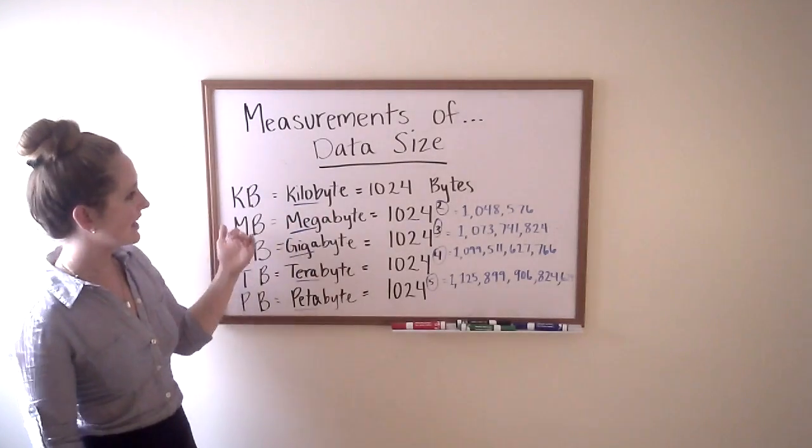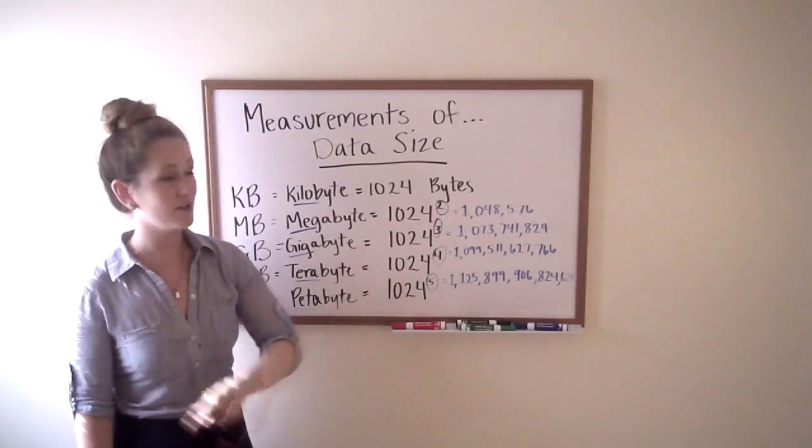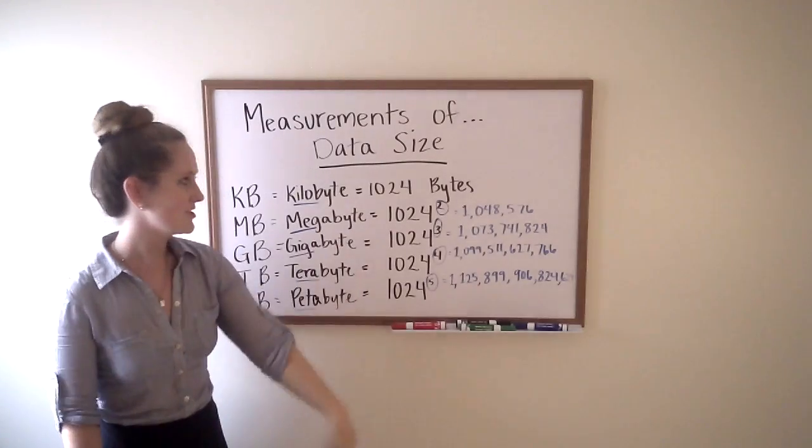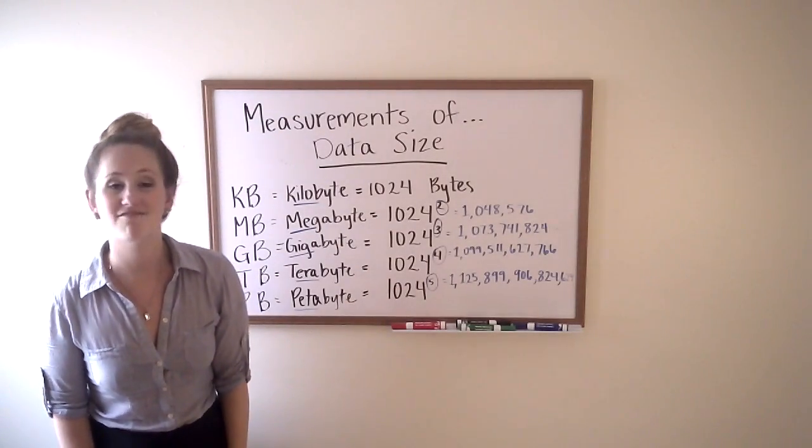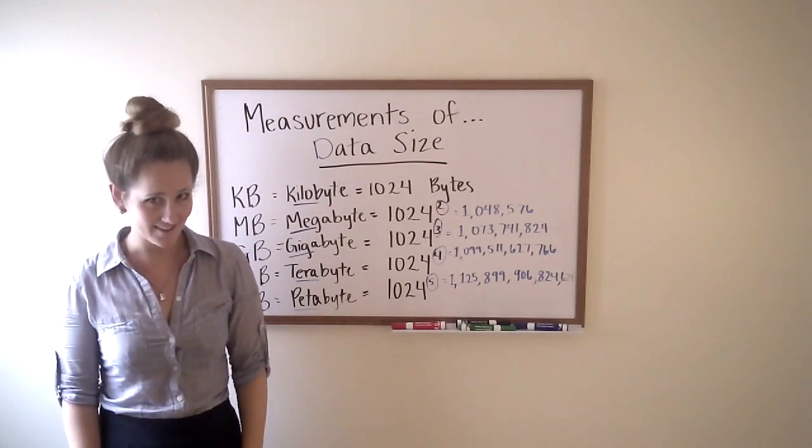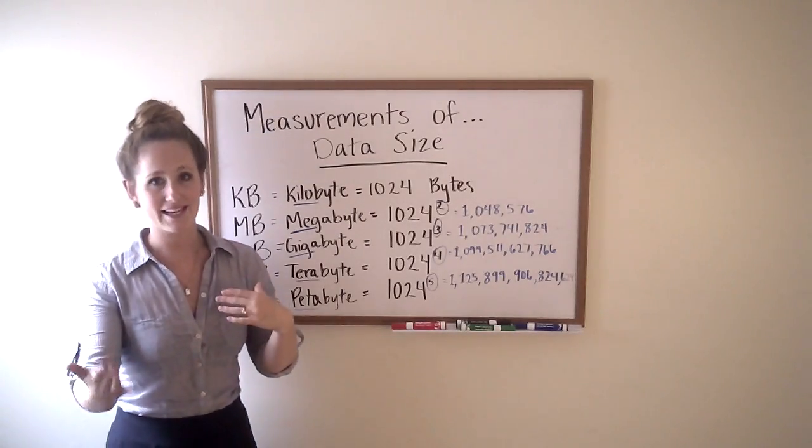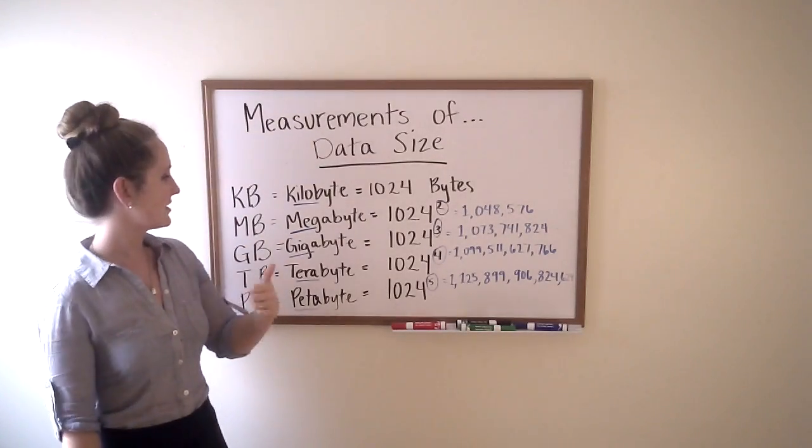After the kilobyte, we've got megabyte, which is 1024 to the power of two, which is the same thing as 1,048,576 bytes. Since we're growing exponentially, that is a big increase.